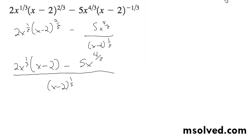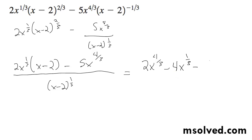Alright, now on the top what we'll do is we'll distribute. So we'll end up with 2x to the 4/3rds minus 4x to the 1/3rd minus 5x to the 4/3rds, all over x minus 2 raised to the 1/3rd.